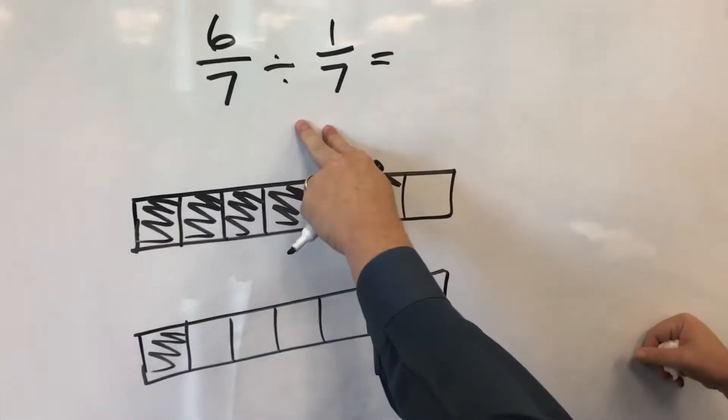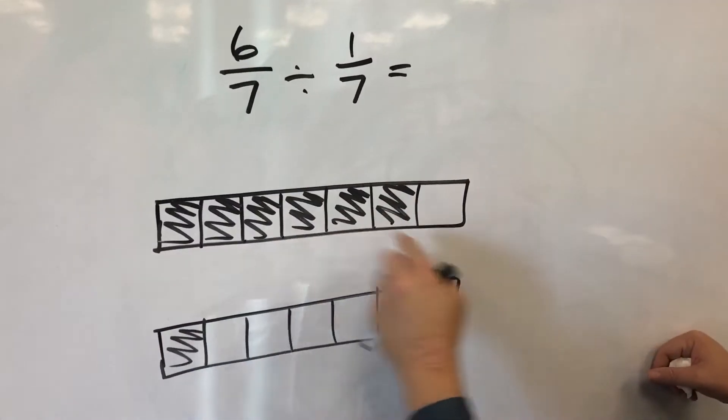All right, so for six sevenths divided by one seventh. The idea is here's a picture of six sevenths.